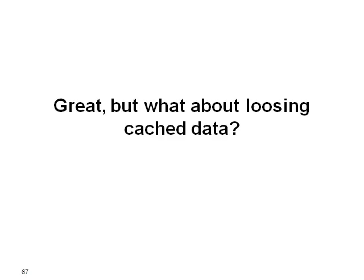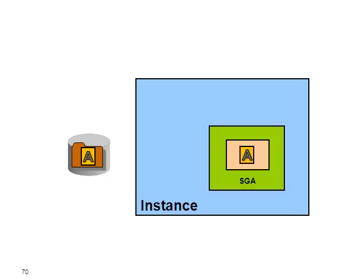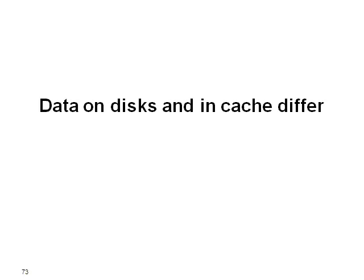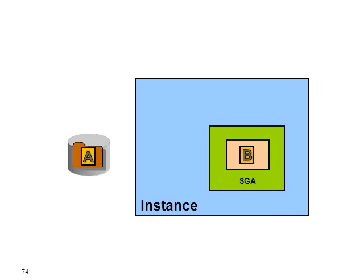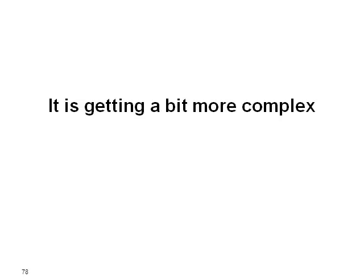But how about losing cached data? Two possibilities. First: the data on disks is the same as in cache — so if you lose the cache then it's not a problem. Now the other case: the data on disks and in cache differ. You modify the data, you committed it for example, but it has not yet been flushed to the disks by the database writer — so you lose it in this case. Are you going to lose your updates? Obviously not. But to understand it, it's getting a bit more complex, and we need to talk about blocks. Blocks are the IO units — they contain table rows.